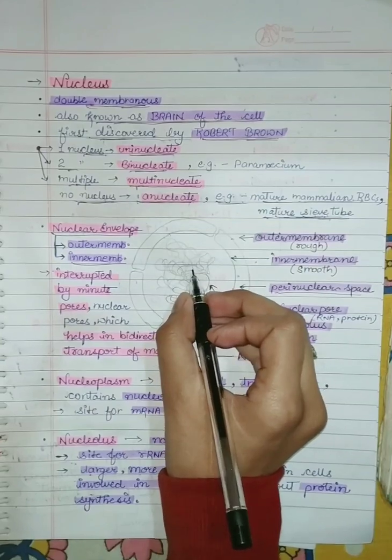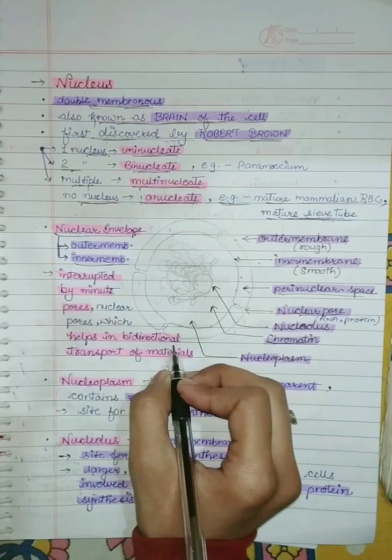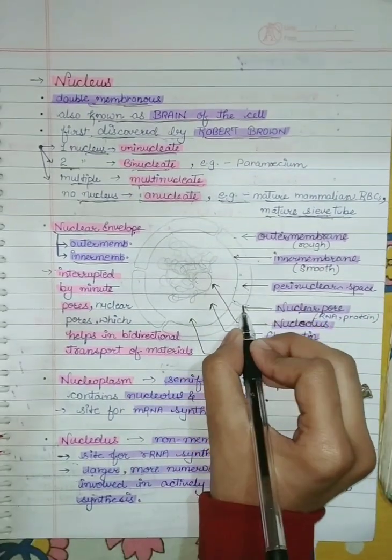Here is the thread-like structure which is extended and elaborate nucleoprotein fibers that is known as chromatin. At a number of places the nuclear envelope is interrupted by minute pores. These pores are known as nuclear pore.